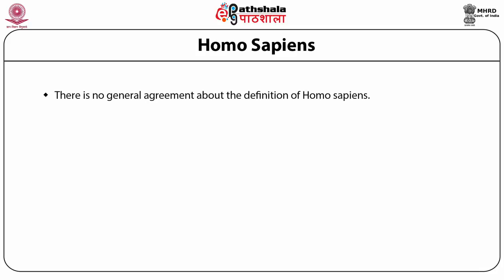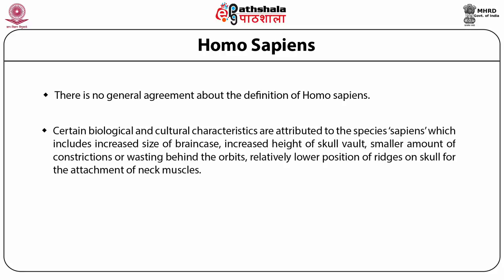There is no general agreement about the definition of Homo sapiens. Certain biological and cultural characteristics are attributed to the species, which include increased size of the brain case, increased height of the skull, smaller amount of constrictions behind the orbital orbits, and relatively lower position of the ridges on the skull for attachment of neck muscles. Associated features include cranial capacity of 900 to 2300 cc, rounded occiput, bent basicranium, maximum skull breadth higher on the skull, flatter face, well-defined chin, and smaller incisors.